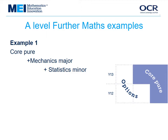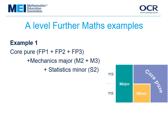In the first example, students take two options alongside the core-pure paper, doing more mechanics than statistics. In size, the core-pure paper is like FP1 plus FP2 plus FP3; the mechanics major paper is like M2 and M3; and the statistics minor paper is like S2. The diagram shows how these fit into two years. If you want to take AS Further Maths, the pure, mechanics and stats studied in Year 12 can be taken as three papers making up an AS qualification.